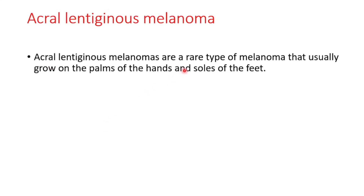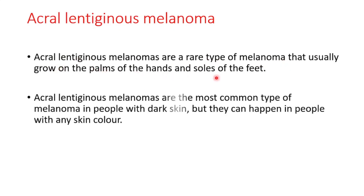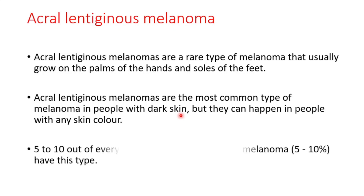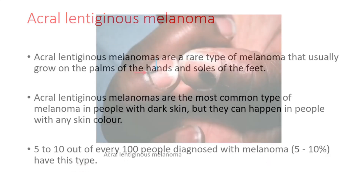The fourth type is acral lentiginous melanoma. This is a rare type of melanoma that usually grows on the palms of the hands and soles of the feet. These are the most common type of melanoma in people with dark skin, but they can happen in people with any skin color. 5 to 10 out of every 100 people diagnosed with melanoma have this type.